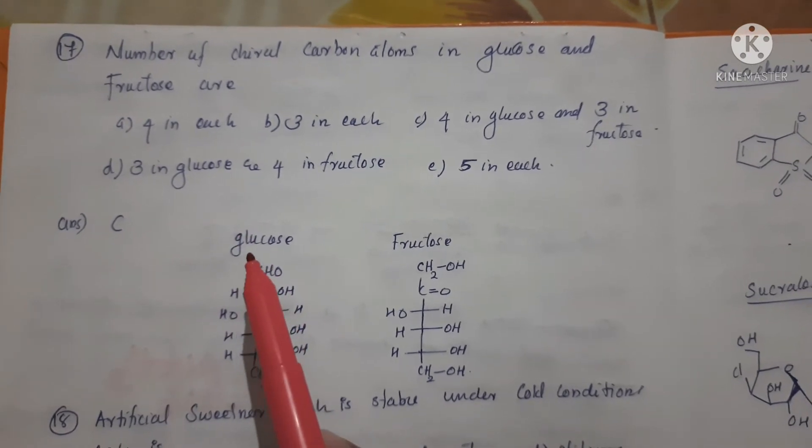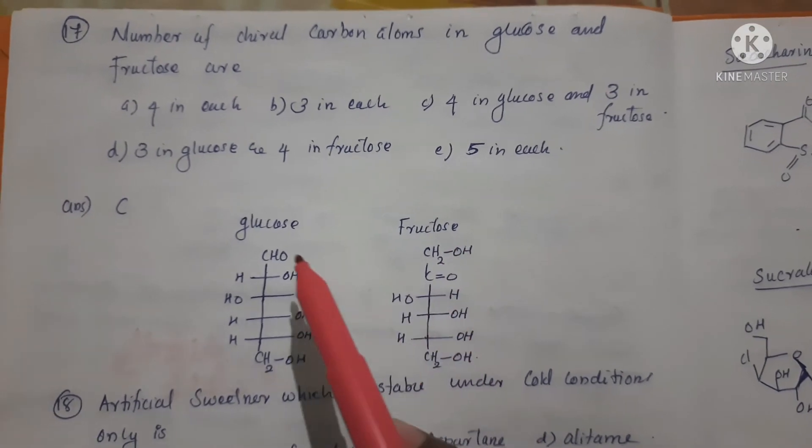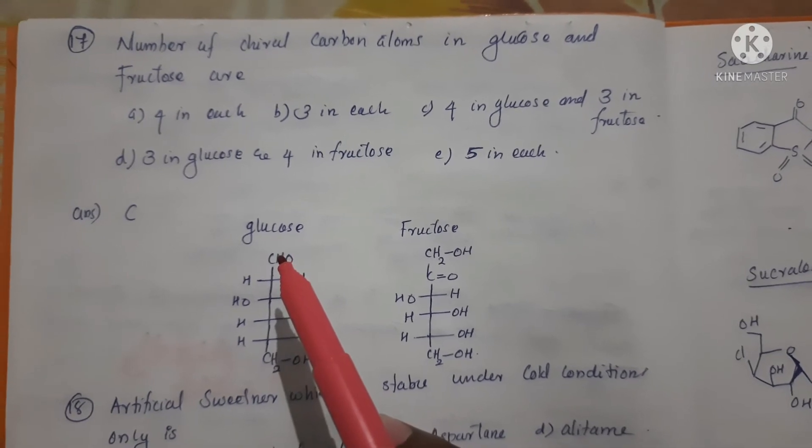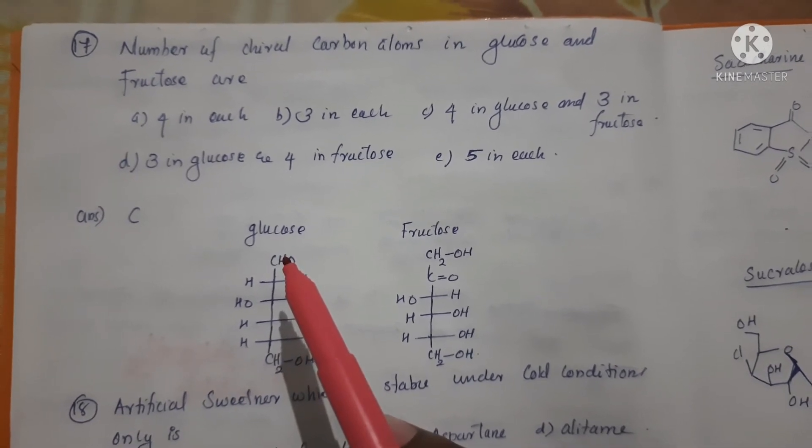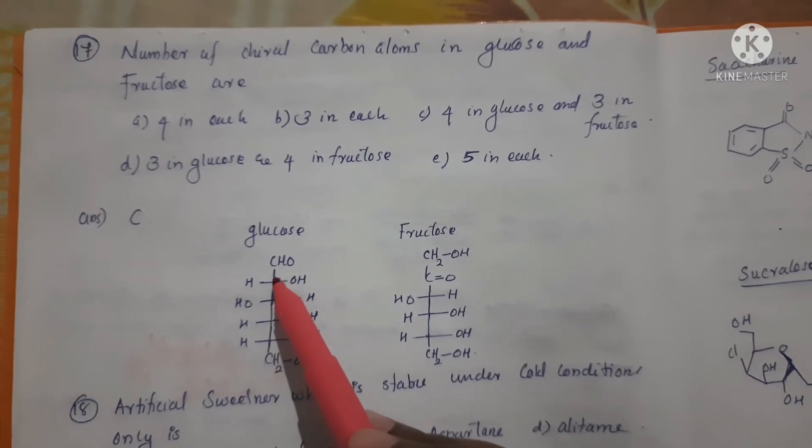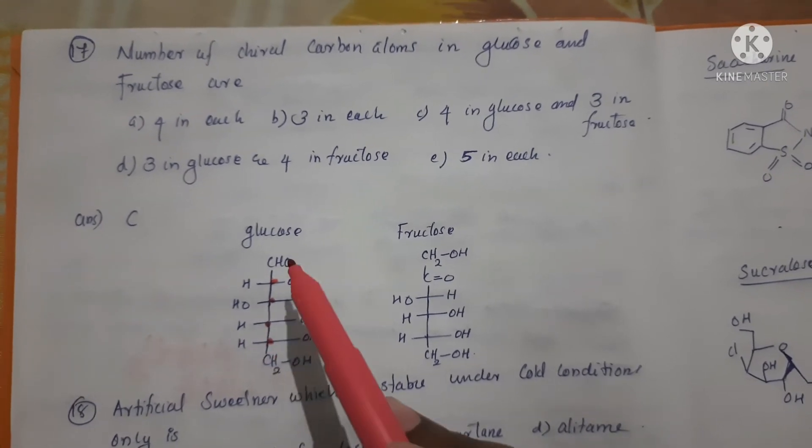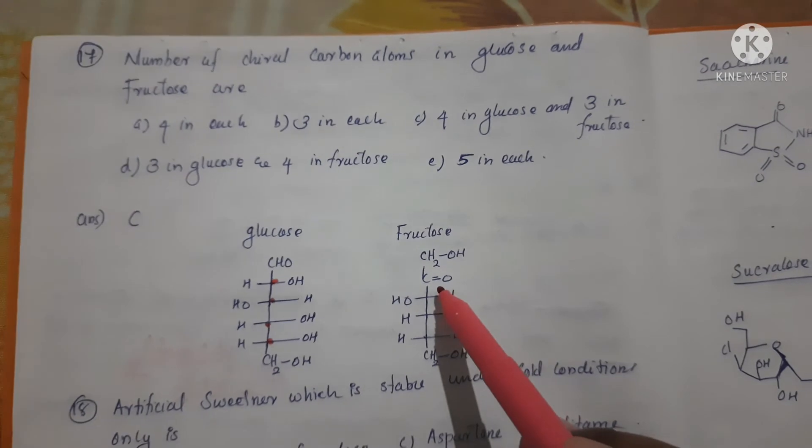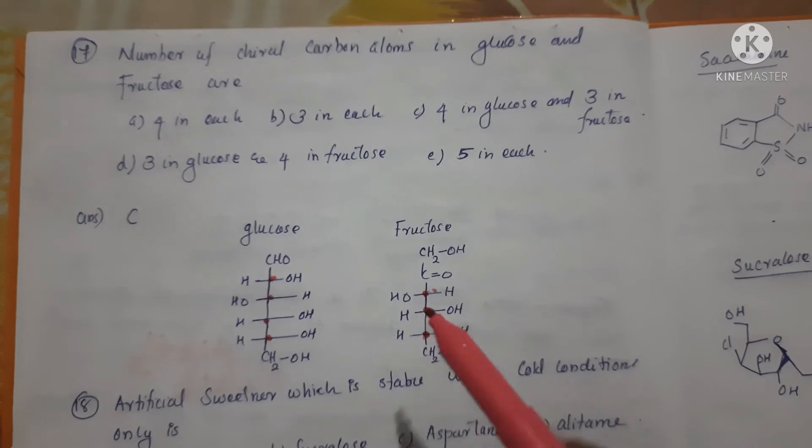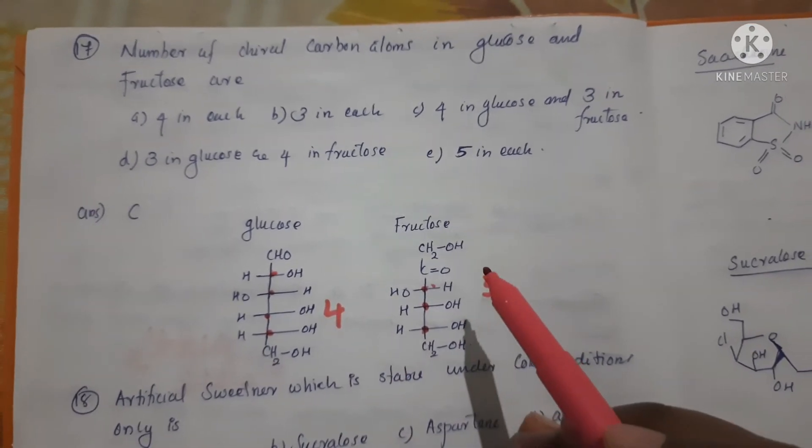Here is a structure of glucose and here is a structure of fructose. A chiral carbon means carbon which contains four different substituents. So here: 1, 2, 3, 4. Here: 1, 2, 3. So here 4 chiral carbons and here it is 3.